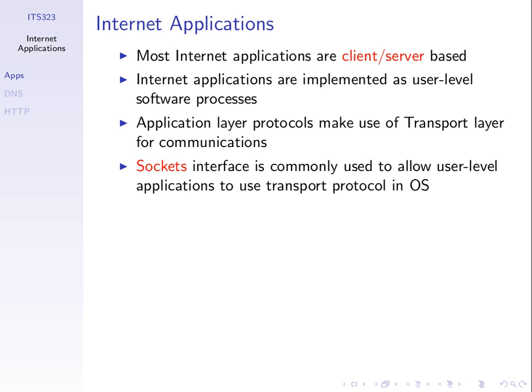Most internet applications follow a client-server model. One application acts as the client and initiates communications to the server. For example, your web browser is the client; a web server application is the server. Application layer protocols make use of the transport layer — web browsing uses HTTP over TCP. Different application layer protocols may use different transport layer protocols. There are also different ways to program an application to use the transport layer, such as using sockets, which you may see in a lab next semester.